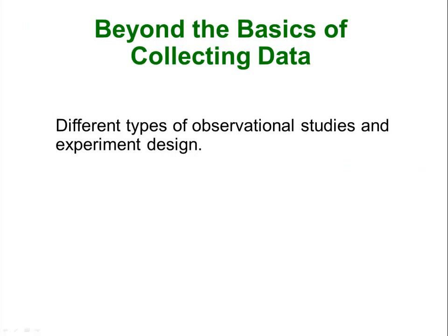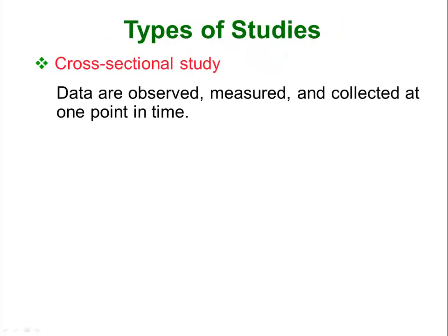Beyond the basics, most of you can probably stop the video at this point — this is just for some of the more advanced statistical data-collecting techniques. A cross-sectional study is where data are observed or collected at one point in time. An example would be looking at the association between obesity and television watching: take a sample of people, poll them about their height-weight ratio and hours watched. It is basically giving you a snapshot picture of people who watch TV and whether or not they are obese — data collected and measured at one point in time.